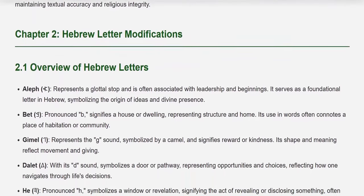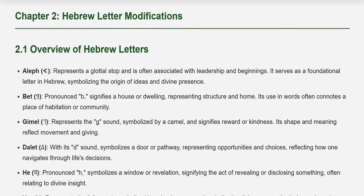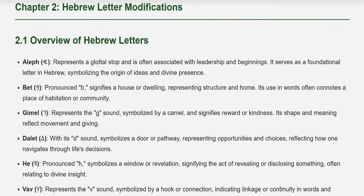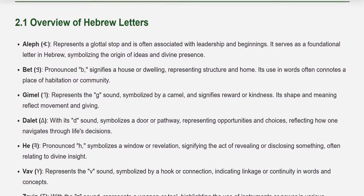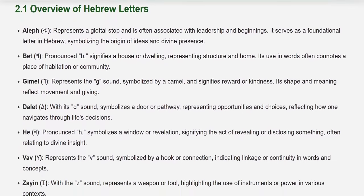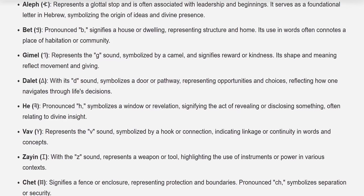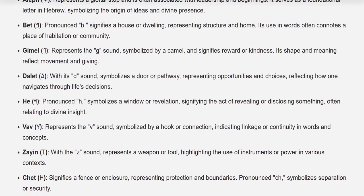Chapter 2: Hebrew Letter Modifications. 2.1 Overview of Hebrew Letters. Aleph represents a glottal stop and is often associated with leadership and beginnings; it serves as a foundational letter in Hebrew, symbolizing the origin of ideas and divine presence. Bet, pronounced B, signifies a house or dwelling, representing structure and home; its use in words often connotes a place of habitation or community. Gimel represents the G sound, symbolized by a camel, and signifies reward or kindness — its shape and meaning reflect movement and giving. Dalet, with its D sound, symbolizes a door or pathway, representing opportunities and choices, reflecting how one navigates through life's decisions.